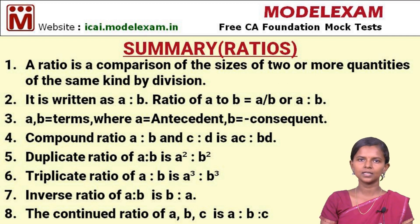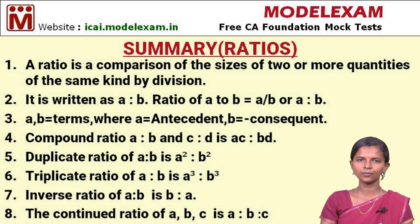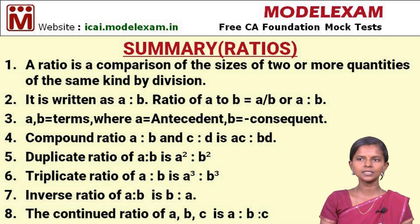The eighth point is the continued ratio of A, B, C. If there are three terms in a continued ratio, we write it in the form A is to B is to C. This is about the summary of ratio.